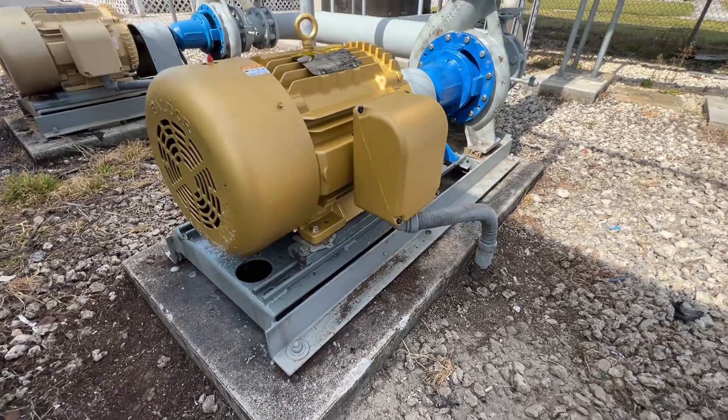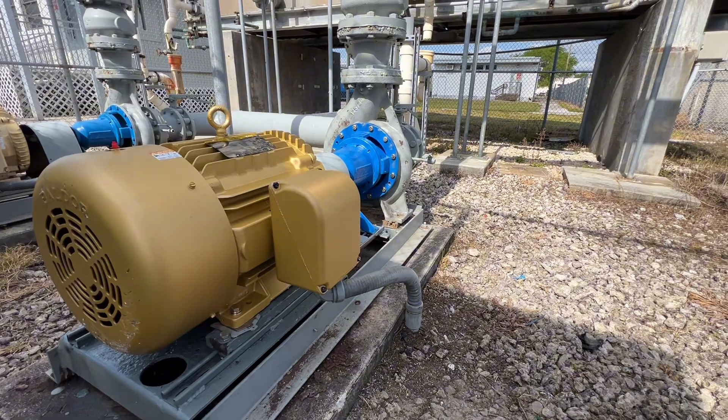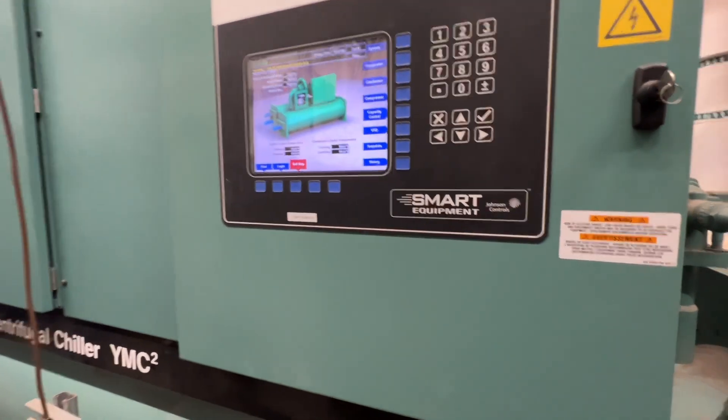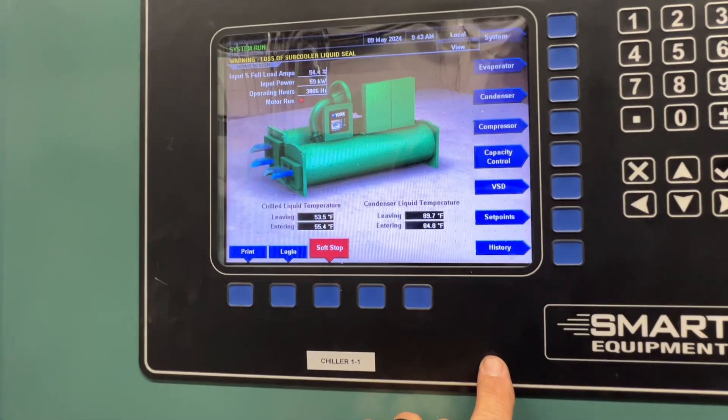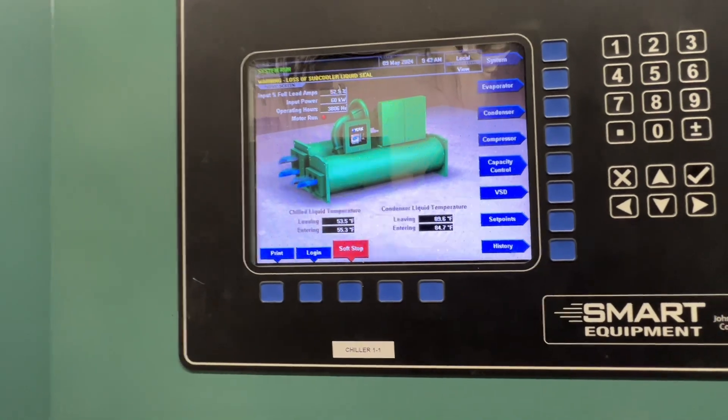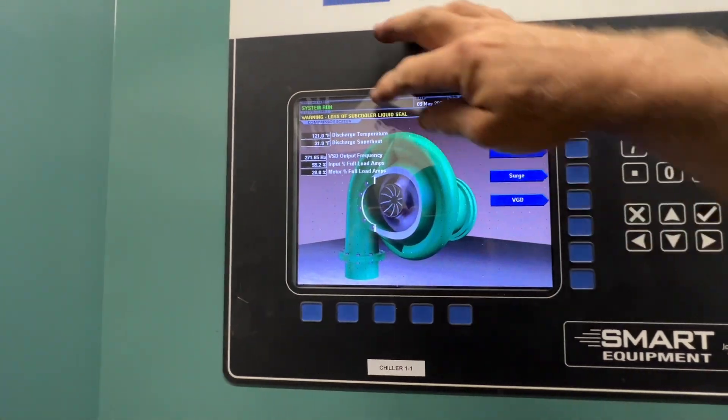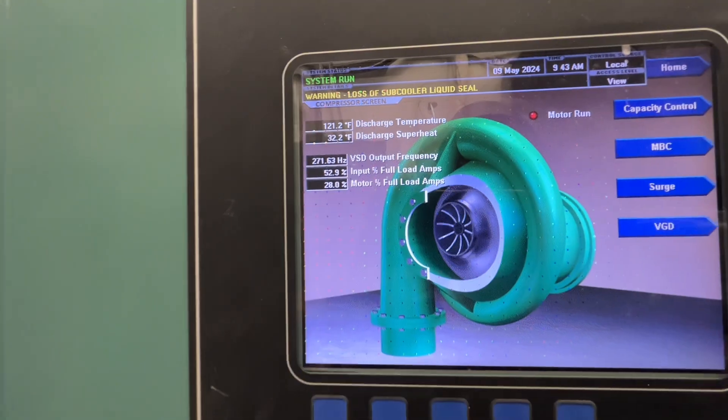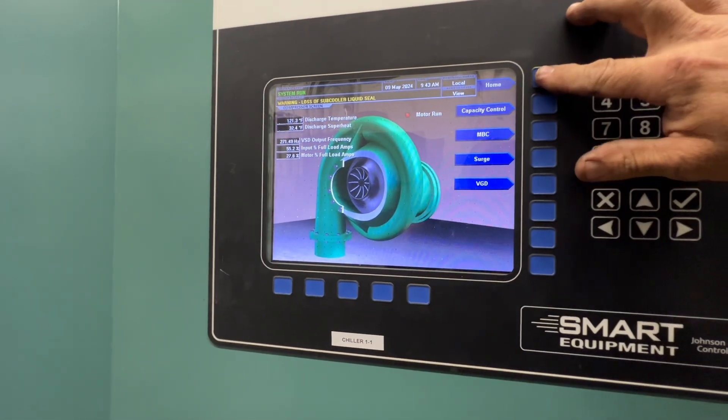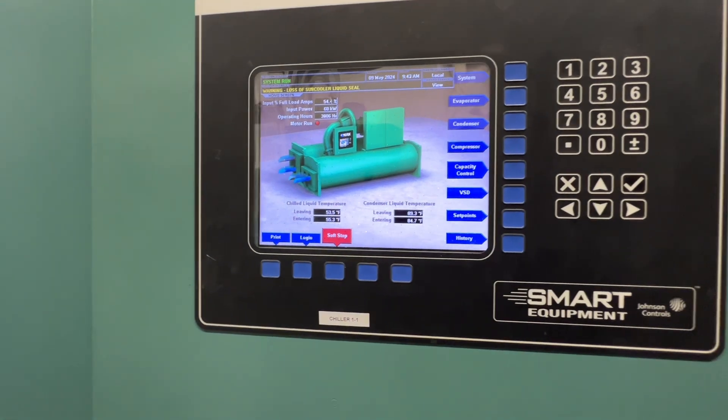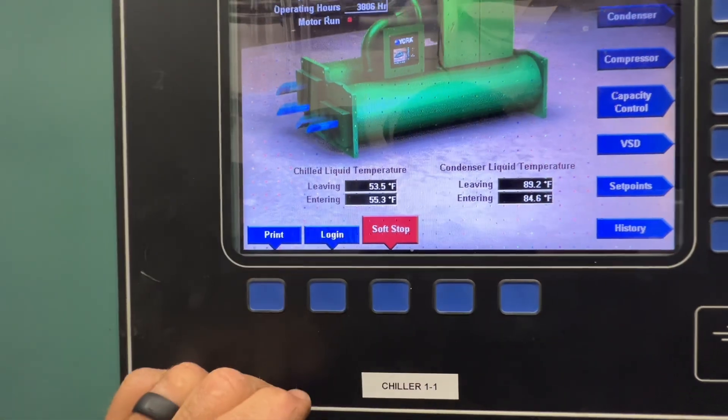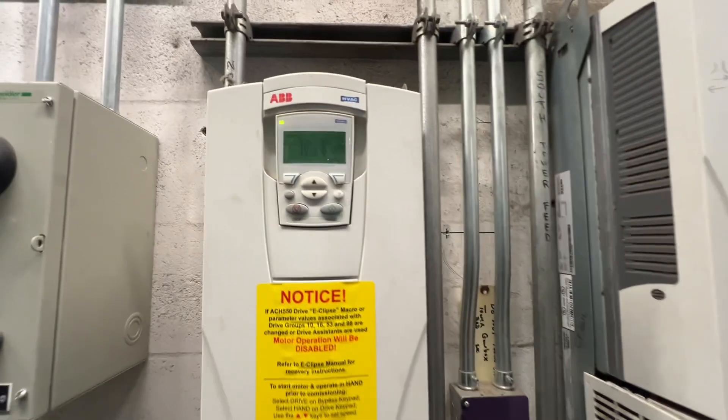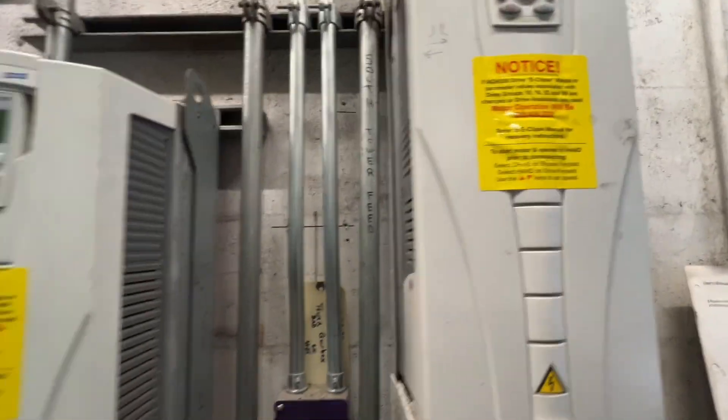The crane never showed up. Chiller 1 finally did start up and our condenser water temp is on the rise. We've got a warning here, massive subcooler liquid seal. Discharge superheat is 32 but we are not fully loaded either.